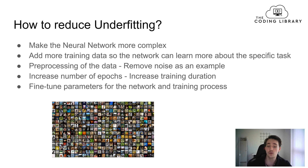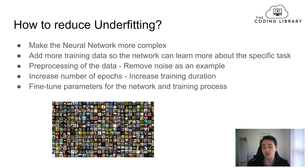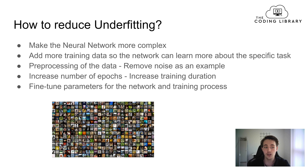We can also increase the number of epochs — the training duration — to reduce underfitting, since in the overfitting case we wanted to decrease epochs. However, if the root cause is insufficient data, simply increasing epochs won't help much. The priority should be to first make the neural network more complex and add more training data, and then afterwards try increasing the number of epochs or pre-processing the data fed to the network.